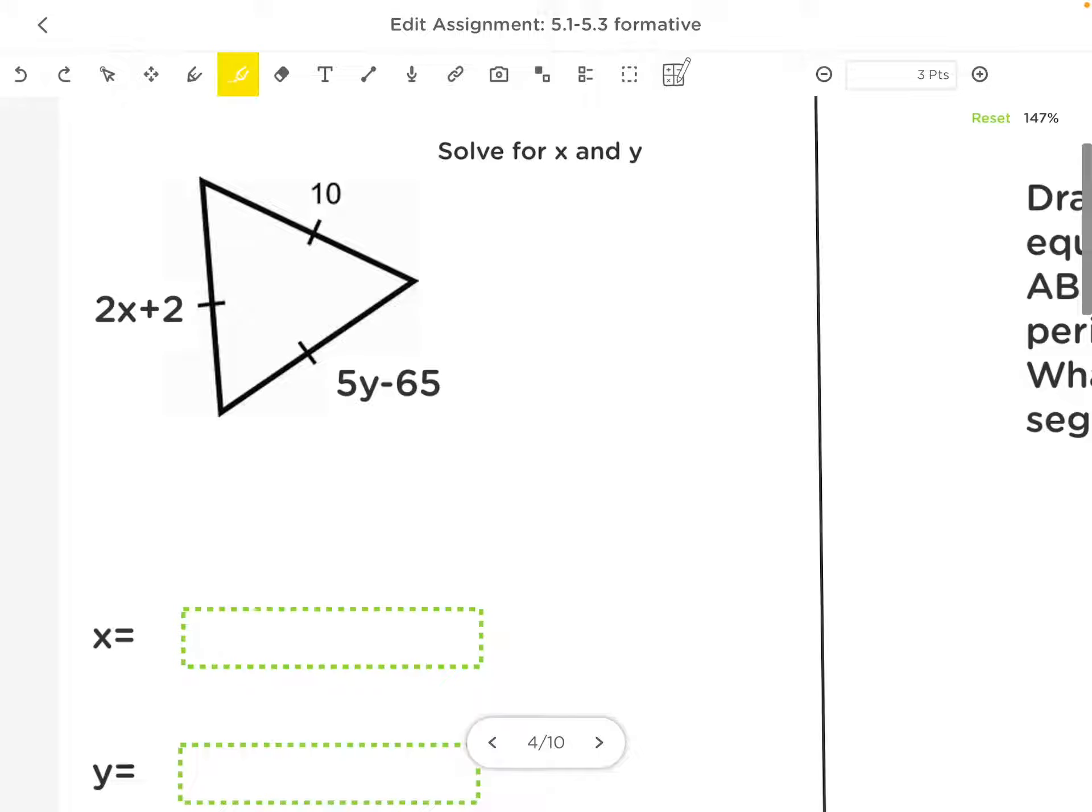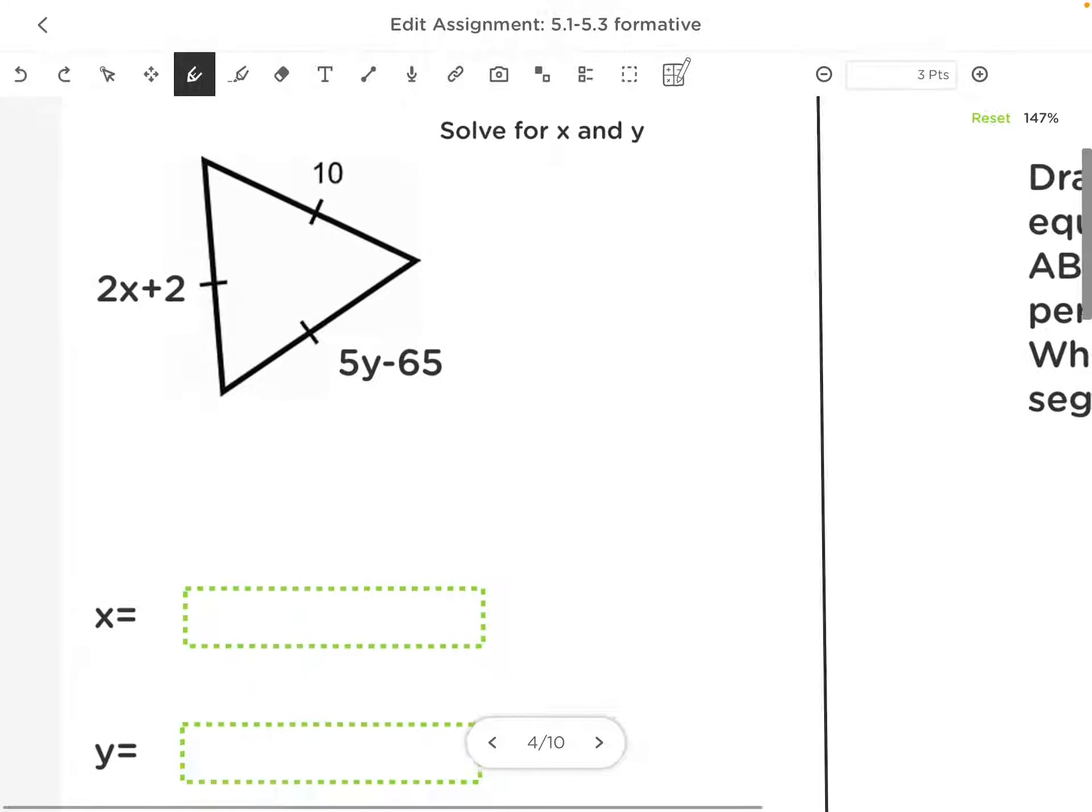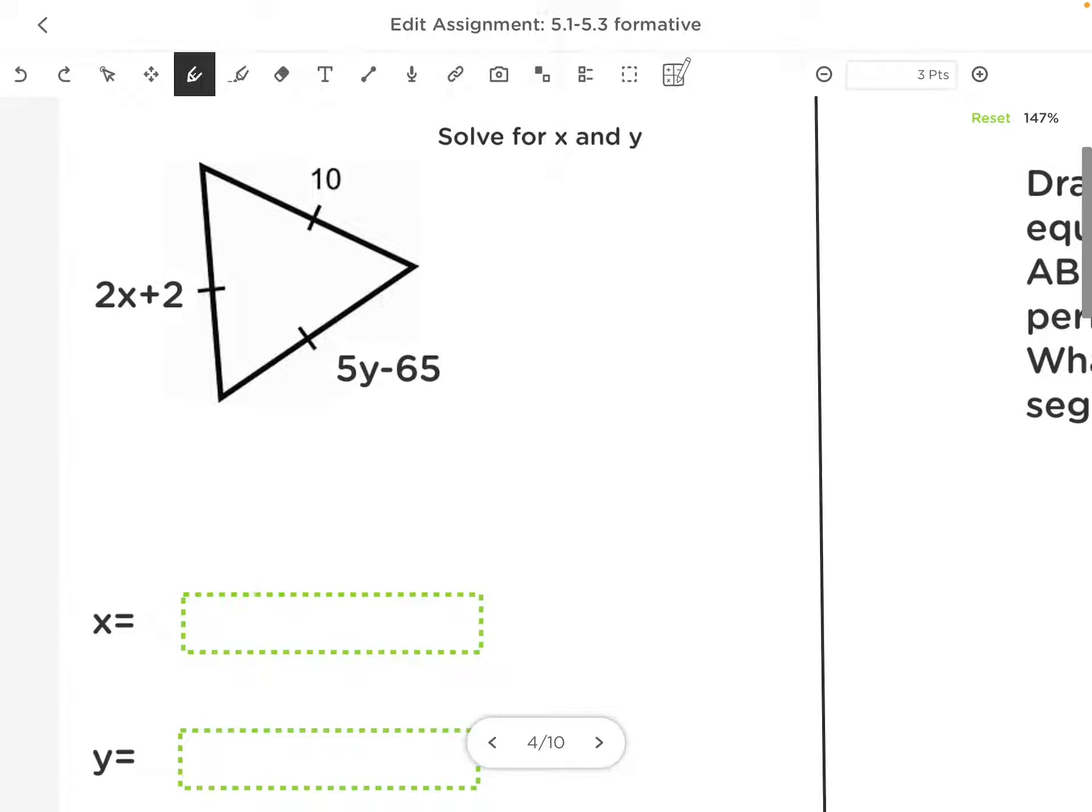However, in this case, we are just looking to solve for x and y. Since I know the sides are the same, to solve for x, I know that 2x plus 2 has to equal 10. So I can solve that for x. I'm going to subtract 2 from both sides and divide by 2, and x equals 4.